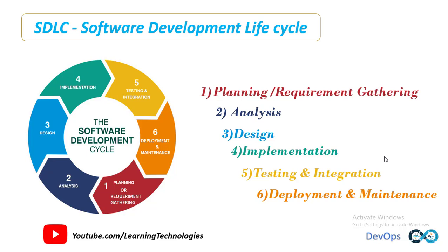HLD gives the architecture of the software product to be developed and is done by architects and senior developers. Low level design is also done by senior developers, and it describes how each and every feature in the product should work and how every component should work. The outcome from the design phase is high level and low level documents, which work as input to the next phase.